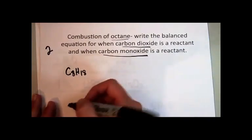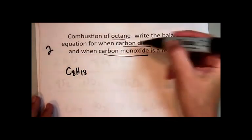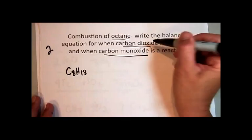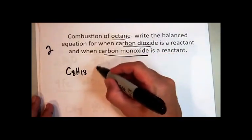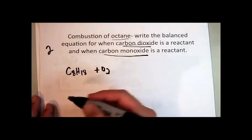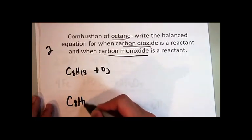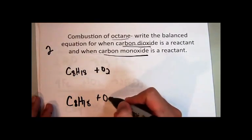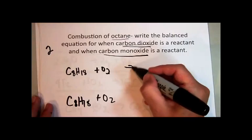So the formula for octane is C8H18. And we're going to write down two different equations. One, when carbon dioxide is a reactant. And since it's combustion in both cases, we have the same reactants. We're just going to end up with different products.